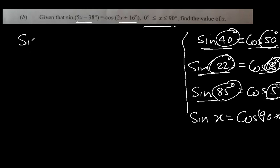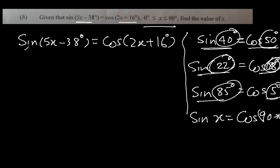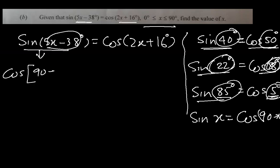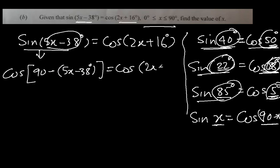Using the identity sin(x) = cos(90° − x), we convert the left side: sin(5x − 38°) becomes cos(90° − (5x − 38°)) = cos(128° − 5x). The right side remains cos(2x + 16°). Since both sides are now cosine of equal angles, we equate: 128 − 5x = 2x + 16.